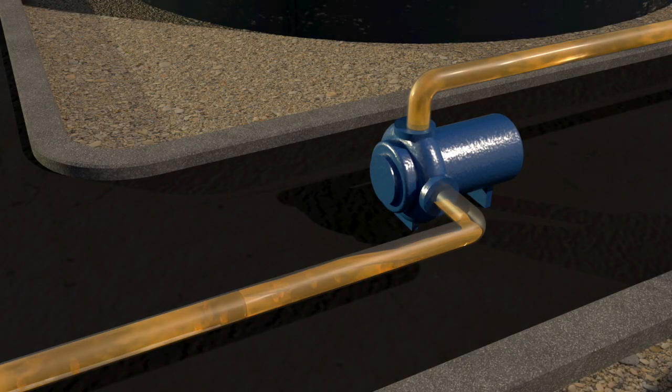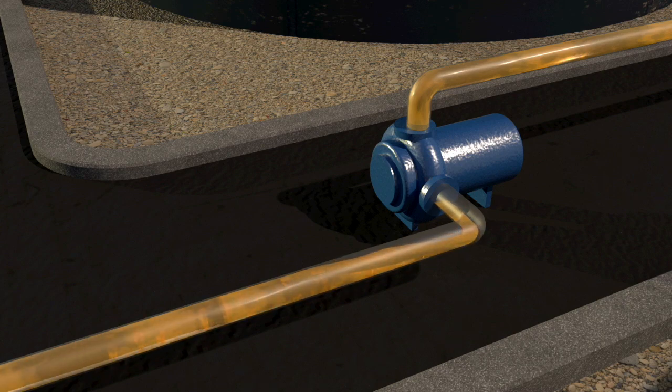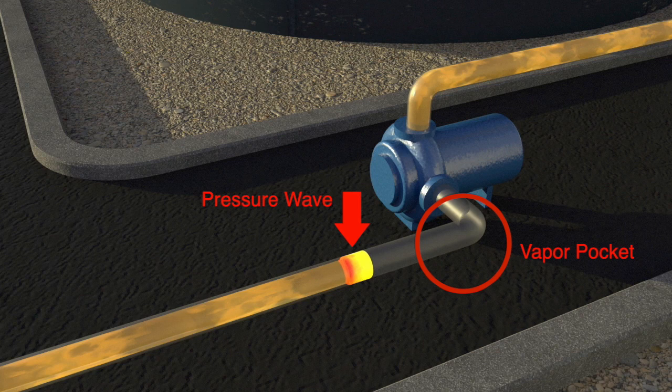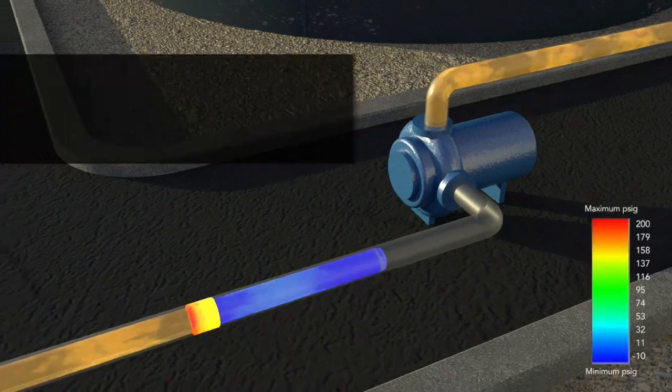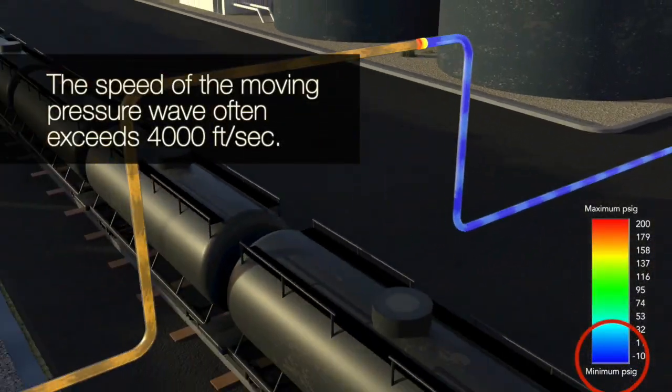In a low-pressure surge event, vapor pockets can quickly form as the pressure wave is emitted out. The speed of the moving pressure wave is a function of elasticity of the fluid and pipe, often exceeding 4000 feet per second.